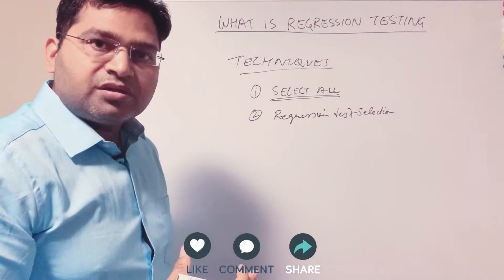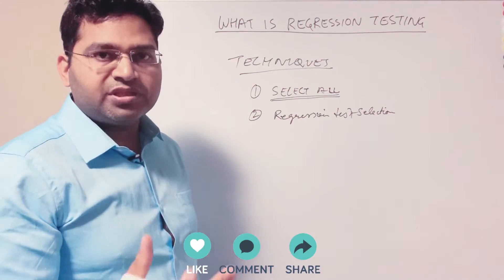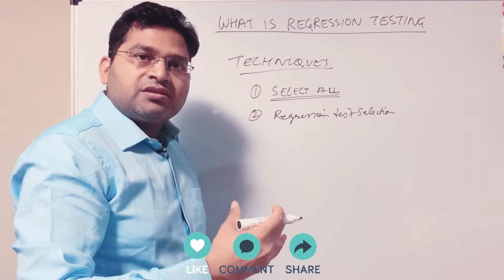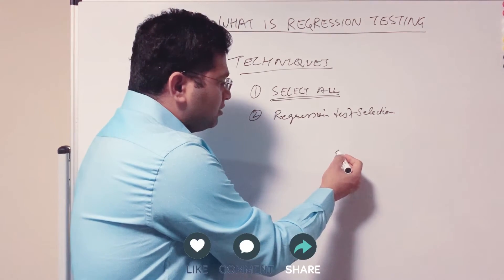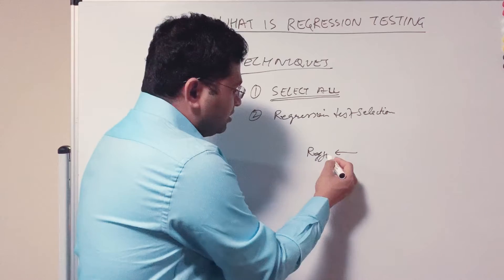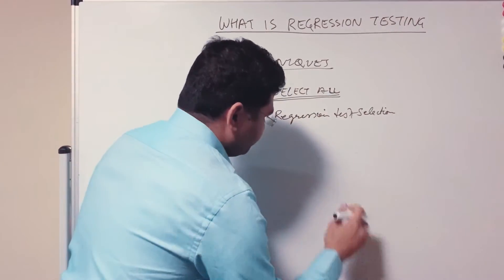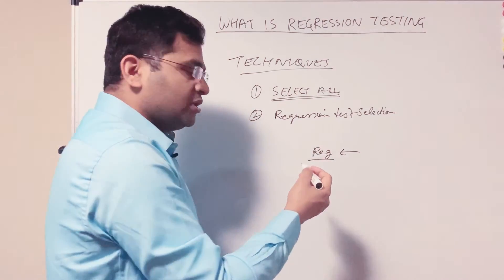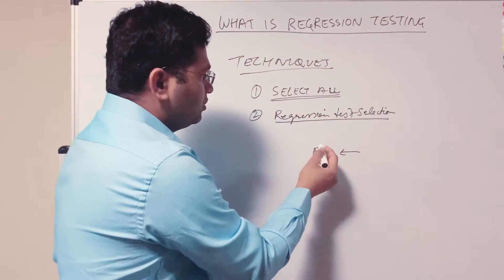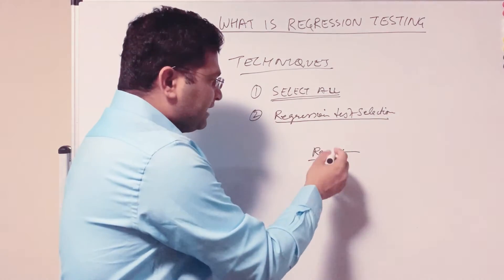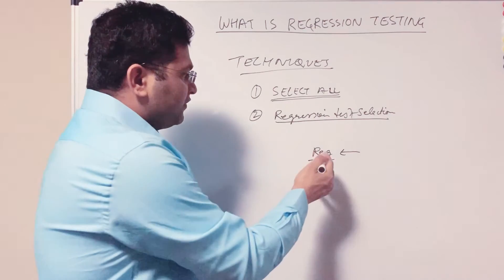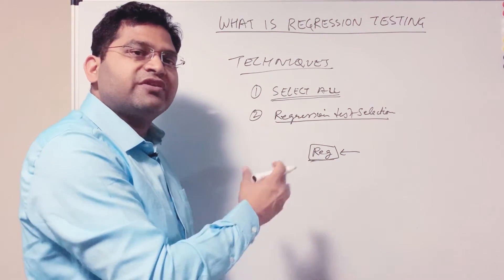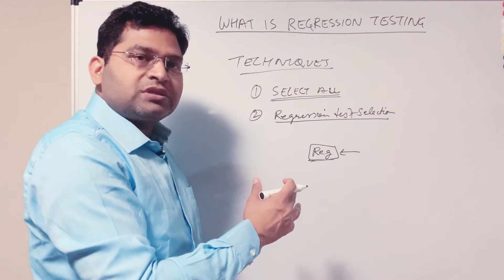The second technique is regression test selection. You analyze what area of the application has been changed. In our previous example, only the Facebook registration was failing and that fix has been done. So you select the test cases or analyze the modules that could be impacted by that fix. You would test all registration test cases with different social media accounts and email, and also test the login functionality.